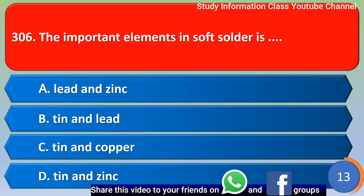Next question: the important element in soft solder is — out of four options, the right answer is Option B, tin and lead. Option B is the right answer.